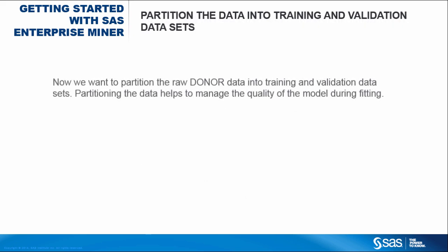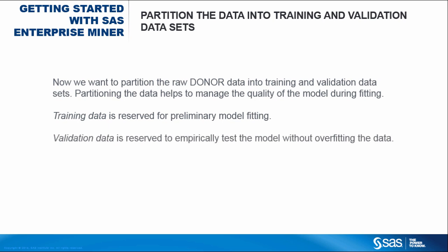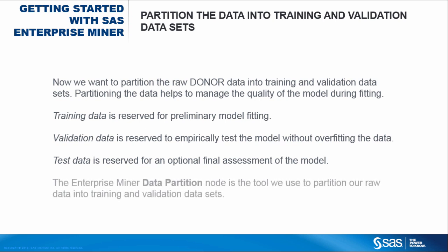Now we want to partition the raw donor data into training and validation data sets. Partitioning the data helps to manage the quality of the model during fitting. Training data is reserved for preliminary model fitting. Validation data is reserved to empirically test the model without overfitting the data. Test data is reserved for an optional final assessment of the model. The Enterprise Miner Data Partition node is the tool we use to partition our raw data into training and validation data sets.